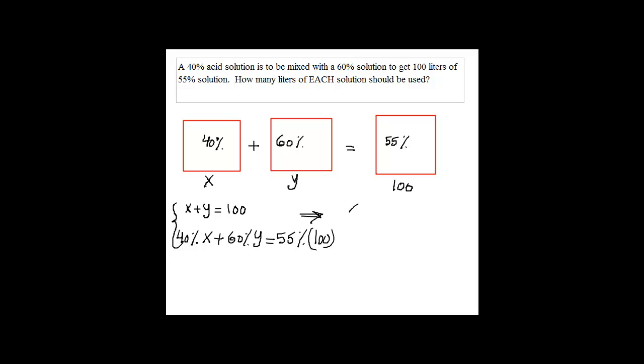Okay, the first equation is x plus y equals 100. And 40% can be written as 40 divided by 100 to be 0.4, so we'll have 0.4x plus 60 divided by 100 to be 0.6y equals 0.55 times 100.